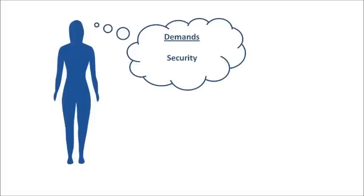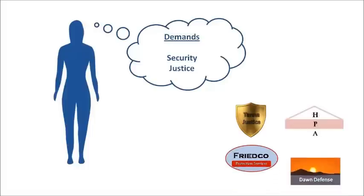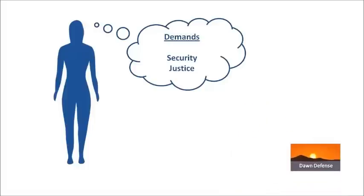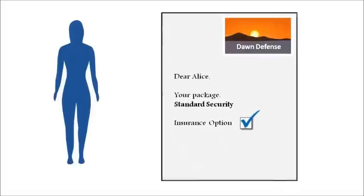She does not want anyone to aggress against her. Alice also demands that if someone does commit aggression against her, she will have the means to bring the aggressor to justice and receive compensation for her losses. A number of competing firms exist to try and satisfy these consumer demands. The firm Alice subscribes to — Dawn Defence — has a good reputation for preventing crime and for obtaining justice when crimes do take place. Alice pays her security bill monthly, the same way she pays for her electricity and telephone services.